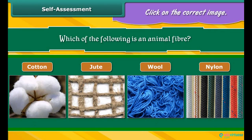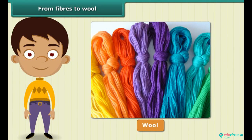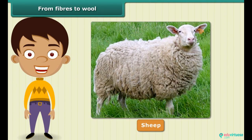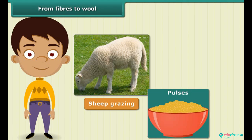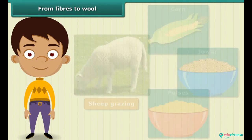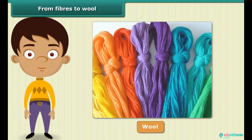For wool to be of good quality, sheep need to be fed a nutritious diet. Apart from what they get from grazing, they are fed a mixture of pulses, corn, and jowar. The well-fed sheep develop a thick growth of hair, known as the fleece of the sheep, which provides us wool.